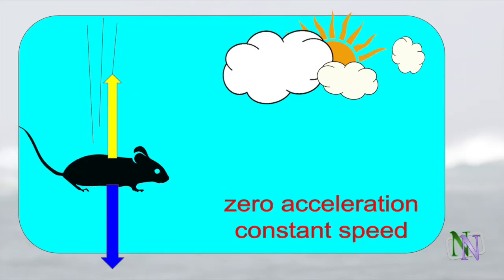Eventually the forces down and up will be equal, and so the mouse is experiencing zero acceleration and its speed won't increase any further — it has reached terminal speed. The factors which affect the size of the terminal speed of an object are its mass, the fluid it is falling through, and its shape and orientation.